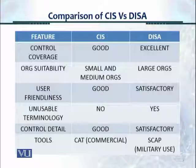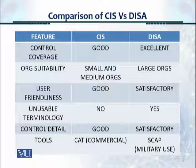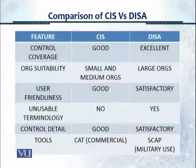As far as user-friendliness is concerned, CIS is very good because it's PDF and the English coverage is good. For DISA, user-friendliness is not as good — it's just satisfactory because it's more direct and not that user-friendly. For unusable terminology, CIS has none; it's addressed to common IT personnel. But DISA does have unusable terminology, usually referring to military terminology, which sometimes creates an issue.